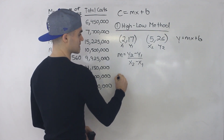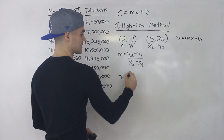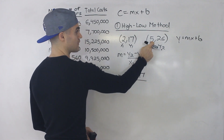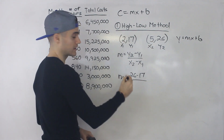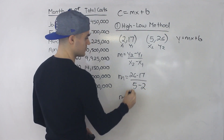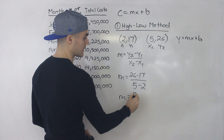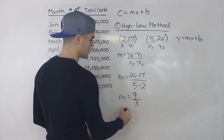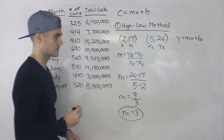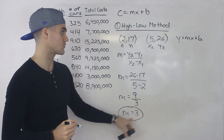We plug it into the slope formula: y2 minus y1 over x2 minus x1. So 26 minus 17, all over 5 minus 2. That gives us 9 over 3, which equals 3. So the slope of this line is equal to 3.